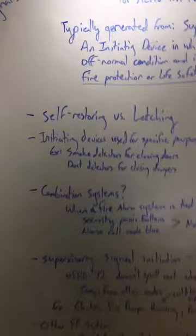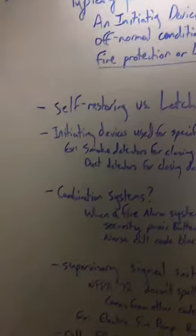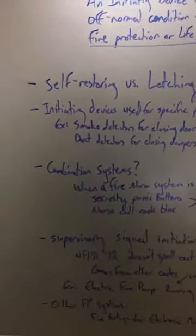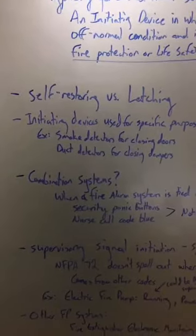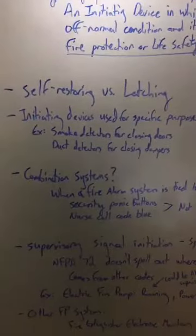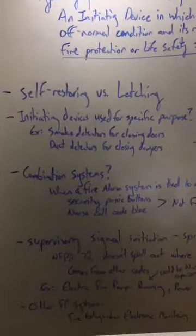Self-restoring versus latching. This is just an indication that some of those supervisory signal initiating devices can either be self-restoring, like an air pressure switch where when it hits a certain low pressure it triggers a supervisory signal, and when that pressure is restored that signal goes away. You also have latching, which requires manual reset.